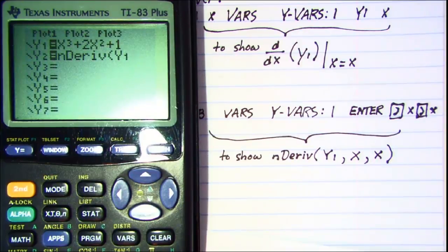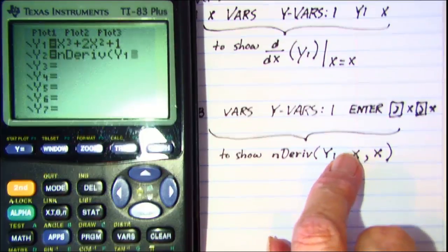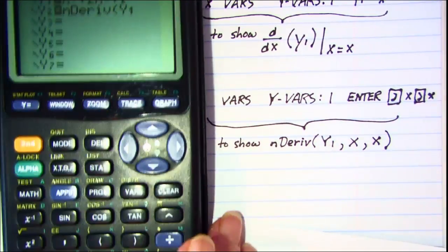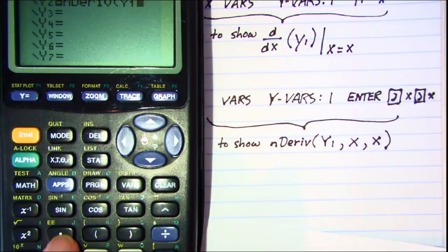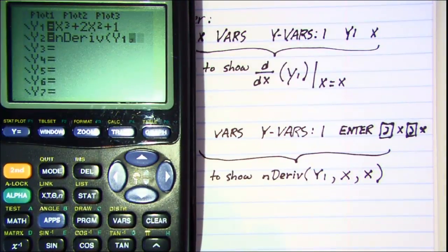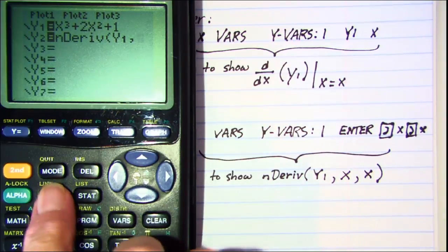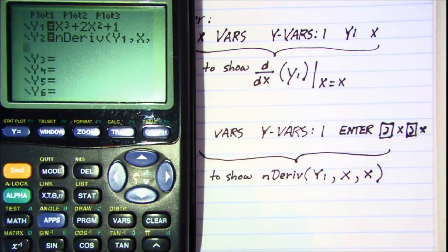So press enter when we choose those. Now we need a comma separating our arguments here. The comma is right below the sine key. There's our sine, and then right below that is our comma. So go ahead and press the comma. And then we need an x comma x. So x and then comma again, x and close the parentheses.